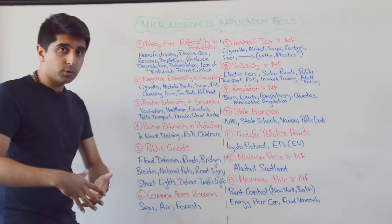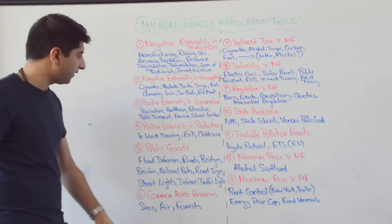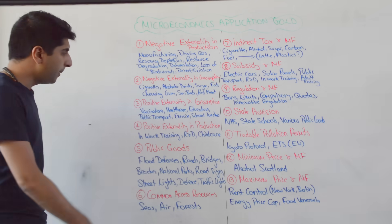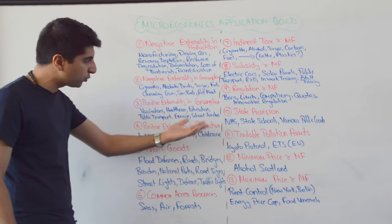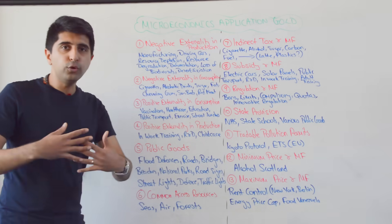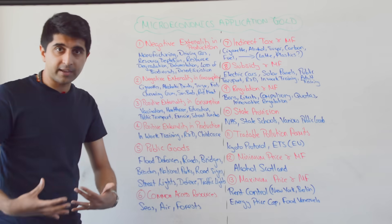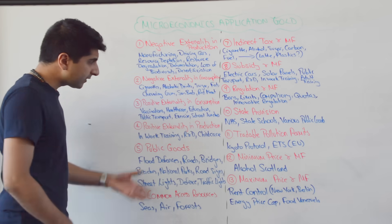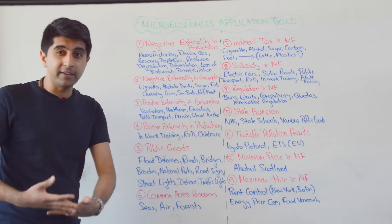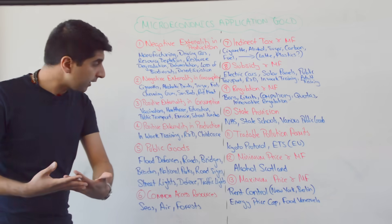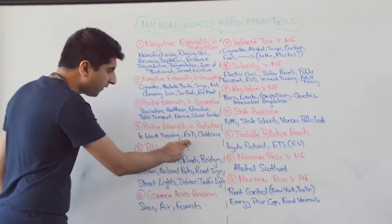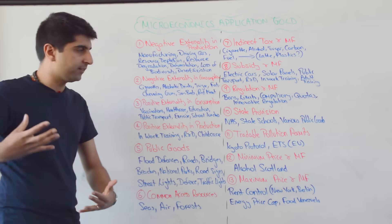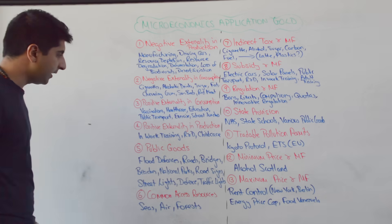Positive externalities in consumption — we're looking at merit goods here. Vaccinations, healthcare, and education are the classics. But also public transport, exercise, and school lunches all generate positive externalities in their consumption. Positive externalities in production — third-party benefits through production: in-work training, R&D, and childcare generate significant benefits to third parties.